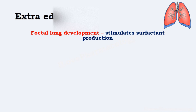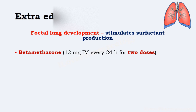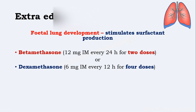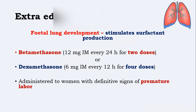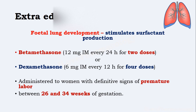How do glucocorticoids help in fetal lung development? Glucocorticoids play a very important role in fetal lung maturation by stimulating pulmonary surfactant production. You can use betamethasone 12 milligrams intramuscularly every 12 hours for four doses. It should be administered to women who have definitive signs of premature labor, and should be administered between 26 to 30 weeks of gestation.